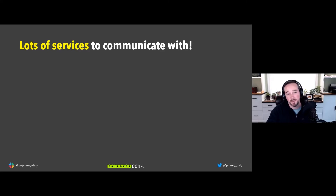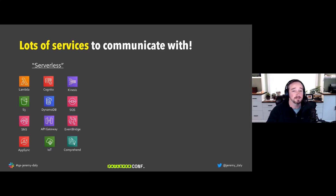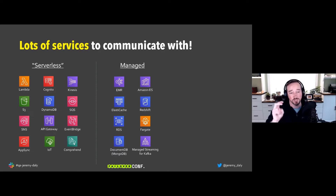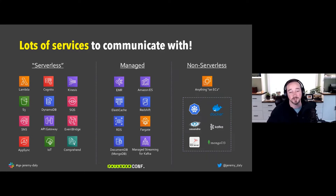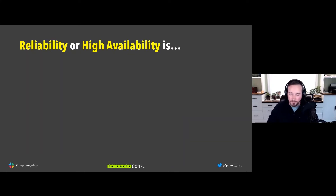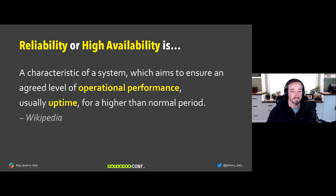There are a lot of services in AWS that need to communicate with one another — Lambda functions, SQS, EventBridge, IoT, AppSync as serverless components, plus managed services like Amazon Elasticsearch, ElastiCache, and Fargate, plus EC2-based systems running Docker, SQL Server, MongoDB, or Kubernetes. We need to make sure we can communicate between all these different services.